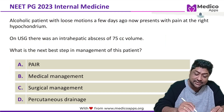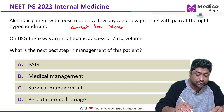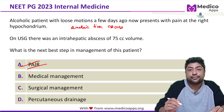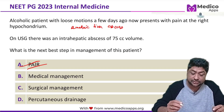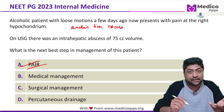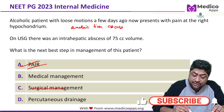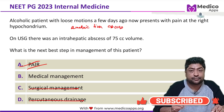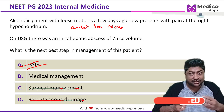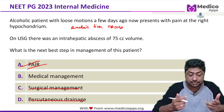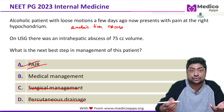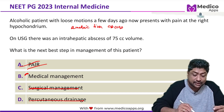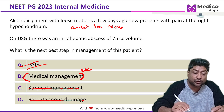We realize that what we are looking at is amoebic liver abscess. PAIR goes out of the window because it is primarily used for treatment of hydatid cysts. This is an uncomplicated amoebic liver abscess, so surgical management or even drainage would not be advisable. Percutaneous drainage is only considered if the patient is hugely symptomatic and the abscess is large. Based on the history, the first step is medical management.